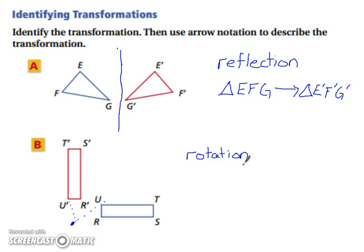And now we simply need to use arrow notation. So we've got R, S, T, U is transforming to the R prime, S prime, T prime, U prime.